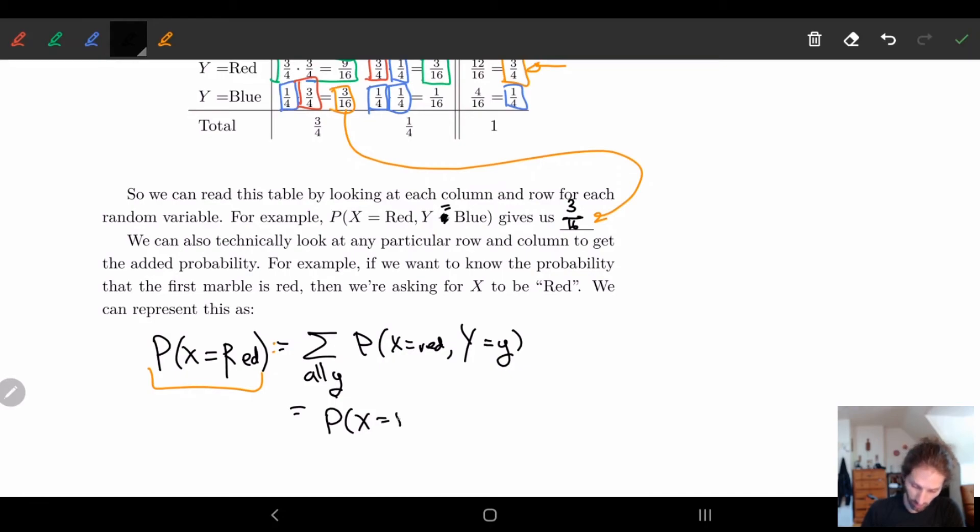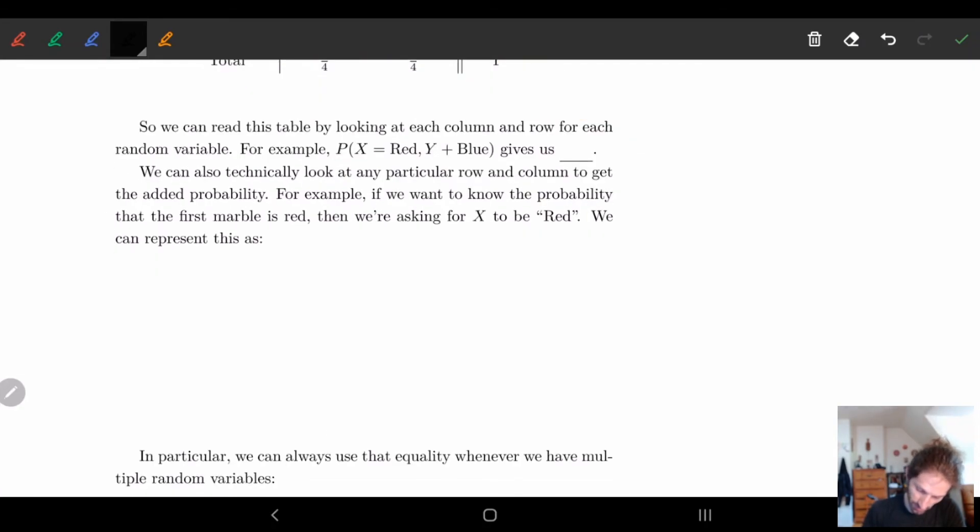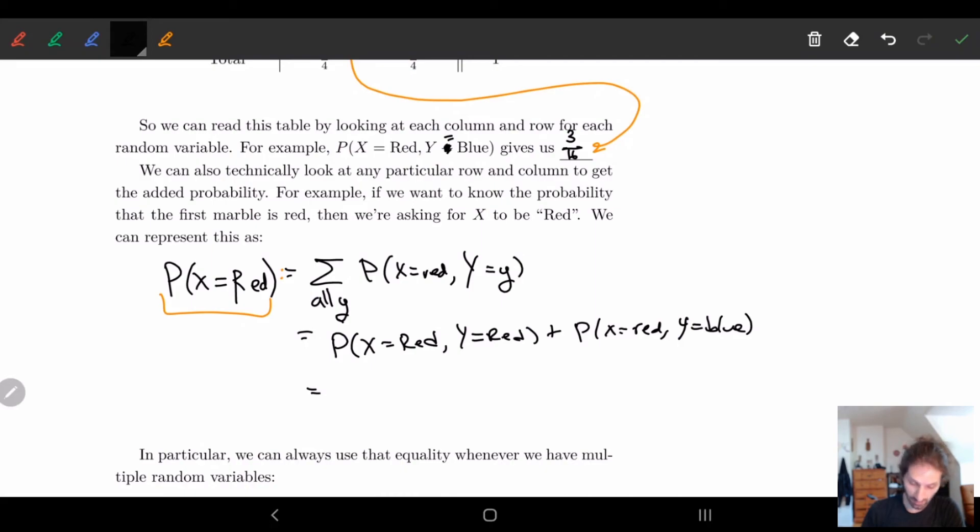So we can look at the two different options. P of x is equal to red is the probability that x is equal to red, y is equal to red, plus the probability that x is equal to red, y is equal to blue. This gives me 9/16 plus 3/16, so we get 12/16, which is 3/4, which is exactly what we would expect.